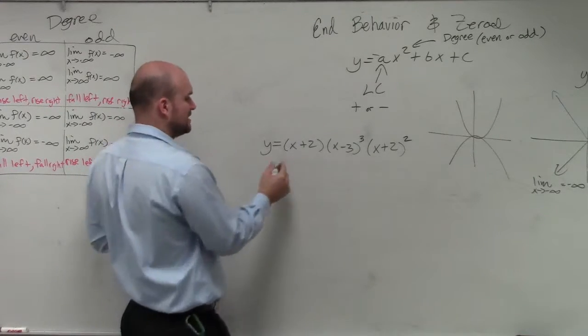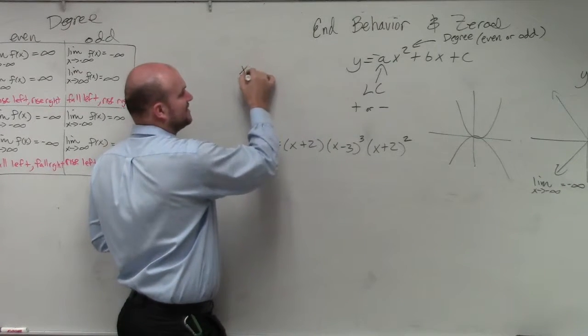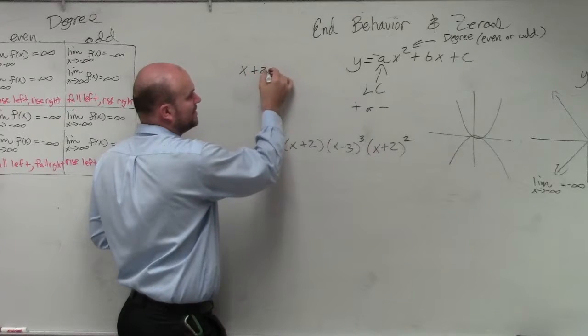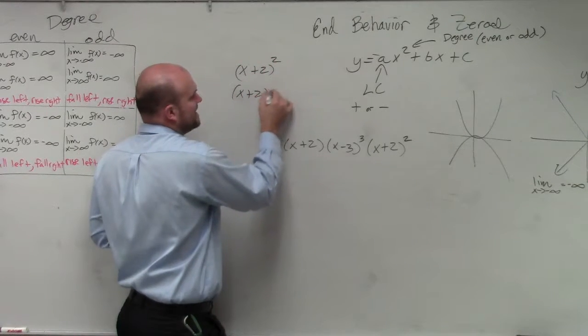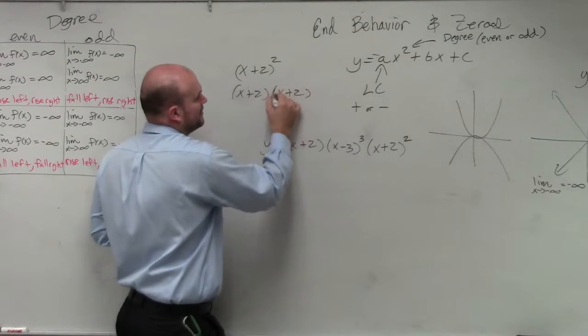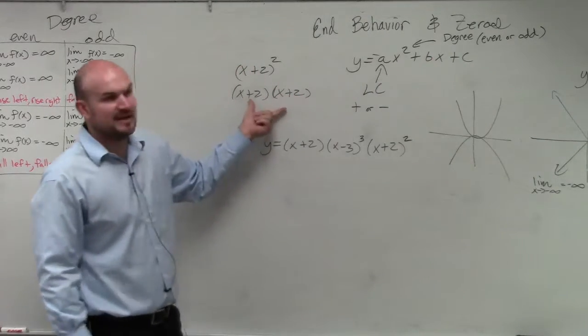Now, there's a couple of things for us to note. First of all, if I was going to expand, for instance, x plus 2 squared, x plus 2 squared is equal to x plus 2 times x plus 2. Now, can we figure out what the degree is if I was just going to expand these two?